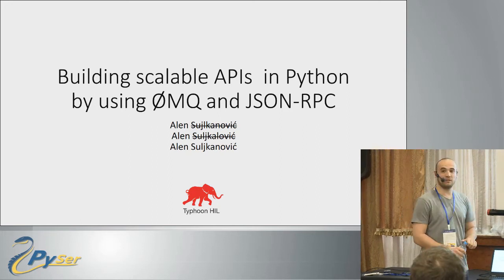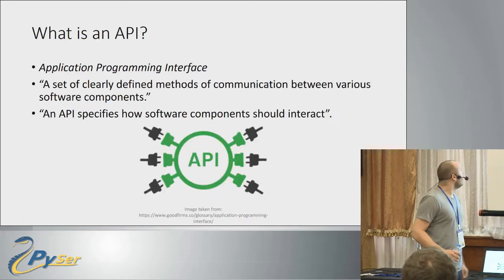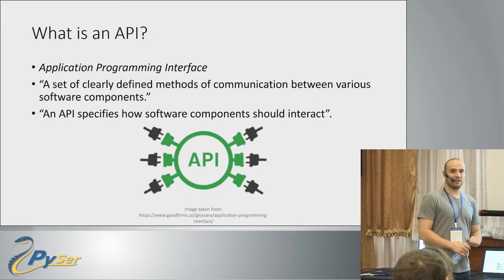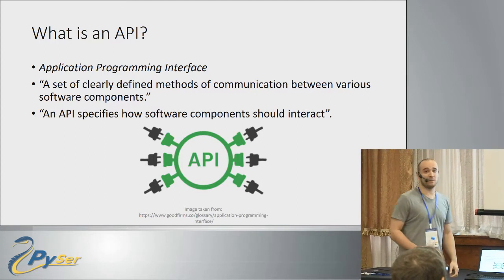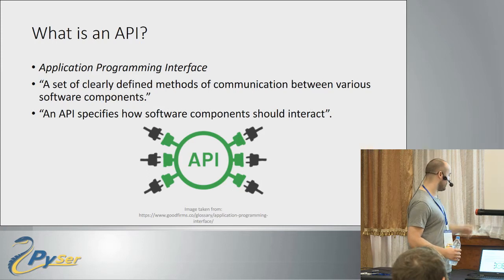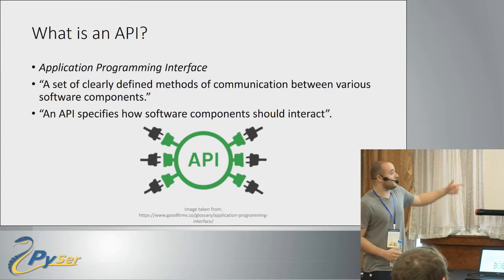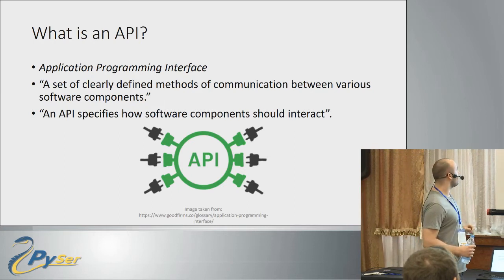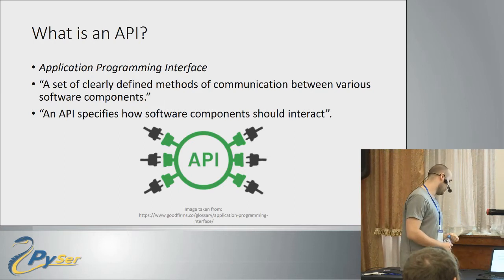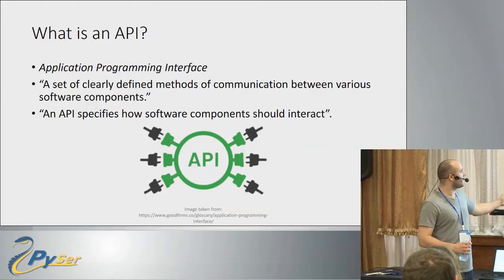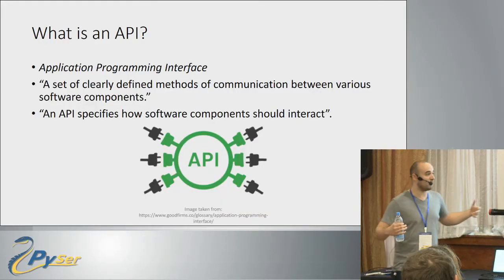Let's start with the definition: what is an actual API? We all know what it is, we use it every day. It stands for Application Programming Interface and, as Wikipedia says, it's a set of clearly defined methods of communication between various software components. If you take a look at this picture, an API helps the left side and the right side communicate by providing an interface between them that is standardized.